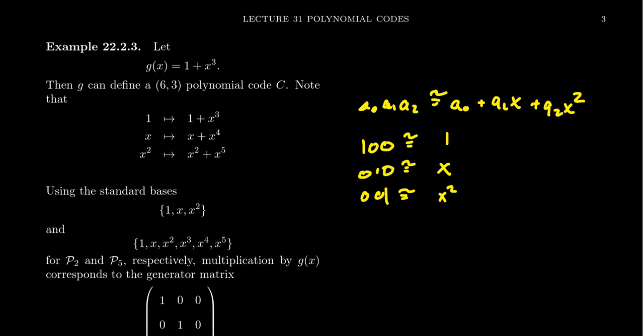So if you take 1 times g, you're going to get g(x), 1 plus x^3. If you take that, if you multiply that by x, you're going to get x plus x^4. And if you multiply g by x^2, you're going to get x^2 plus x^5, like so.